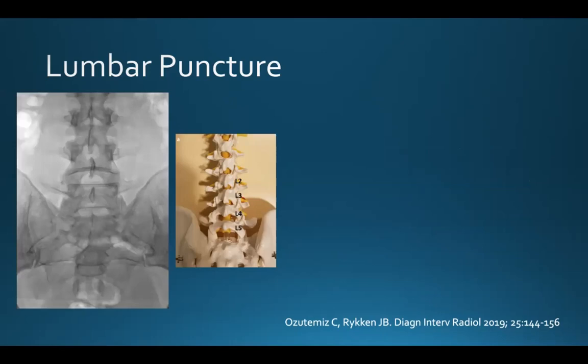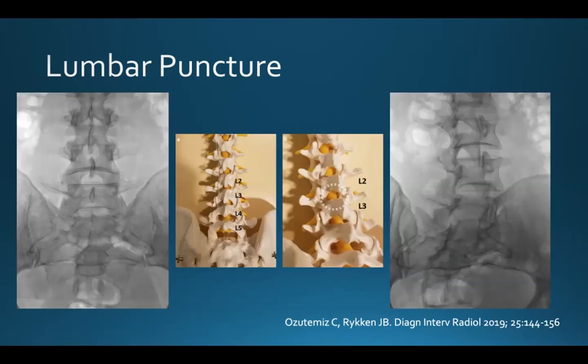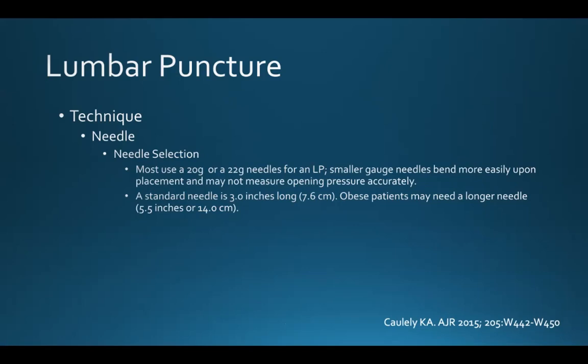Here's an image from a procedure along with a model of the spine. You can easily see the lighter interlaminar spaces just below each of the spinous processes. By rotating the C-arm slightly laterally and slightly caudally, you can see how those interlaminar spaces open up and become an even better target for lumbar puncture.